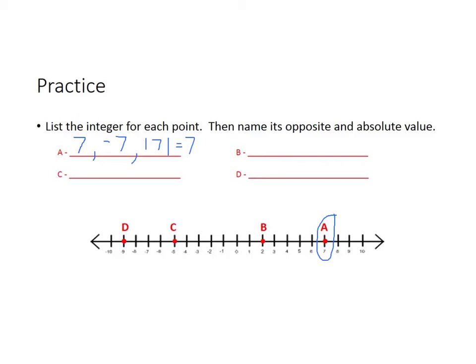Let's do B. The integer that point is on is two. The opposite of two on the other side of zero would be negative two. And the absolute value of two is two — it is two units away from zero.